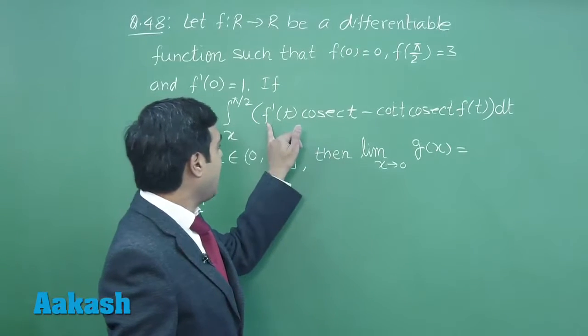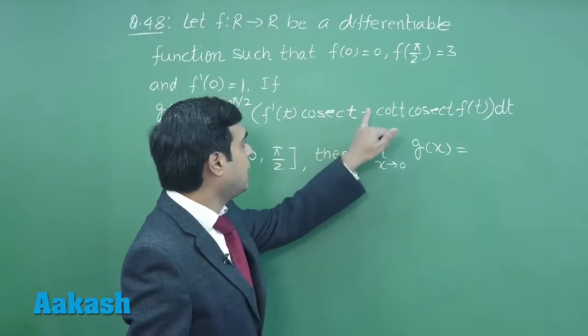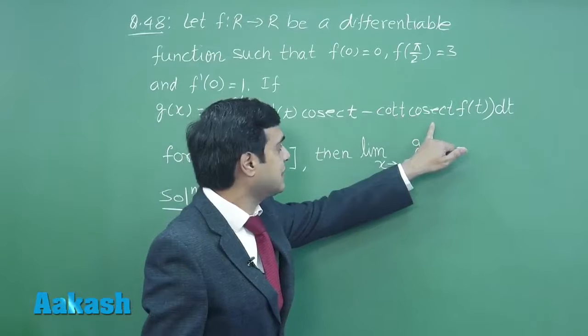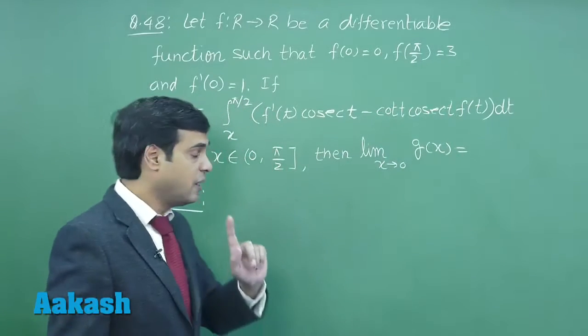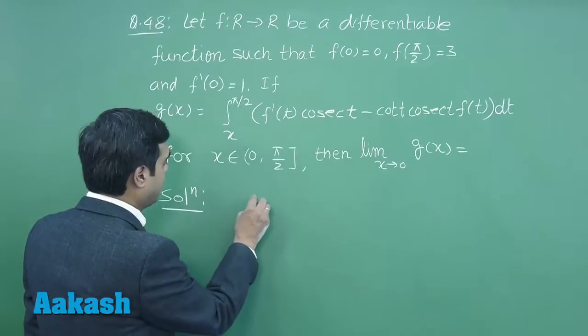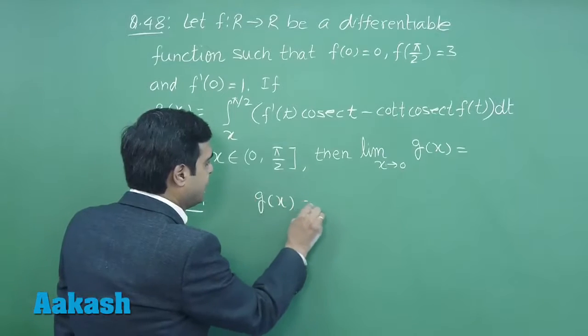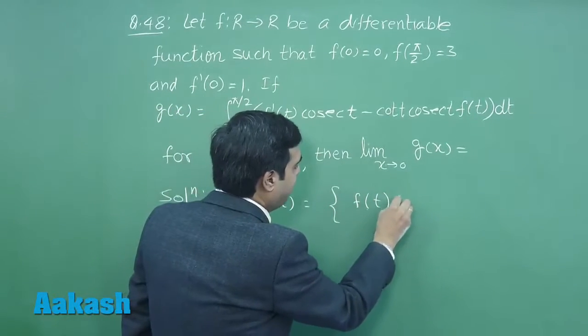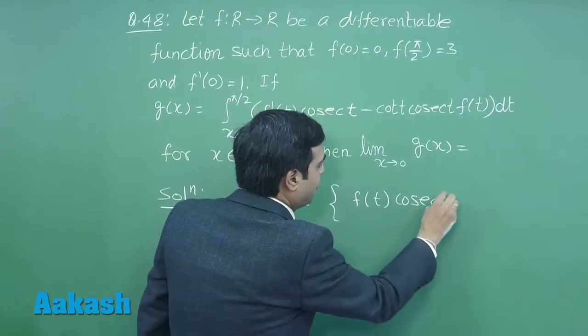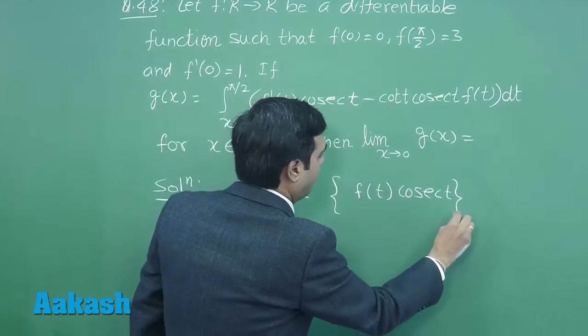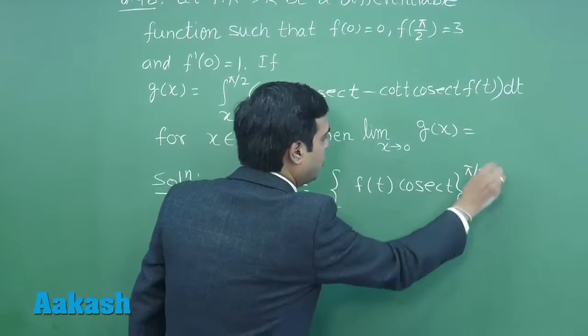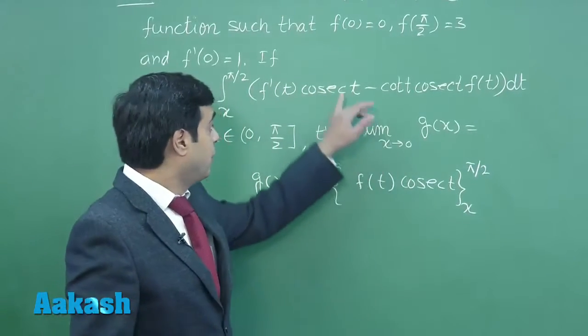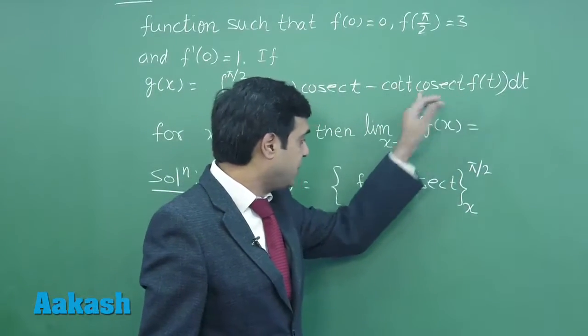If we read this integral [f'(t)cosec(t) - cot(t)cosec(t)f(t)]dt, we can clearly see g(x) is actually f(t)cosec(t) from x to π/2. This point is clear when you consider this expression.